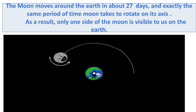The Moon revolves around the Earth in about 27 days, and exactly the same period of time, the Moon takes to rotate on its own axis. As a result, only one side of the Moon is visible to us on the Earth.